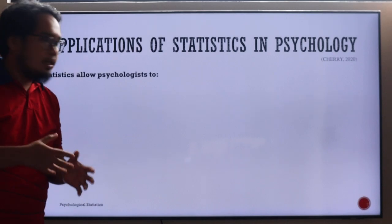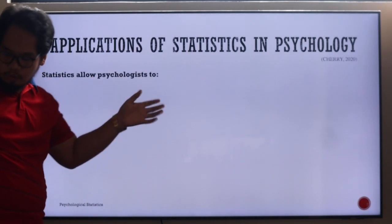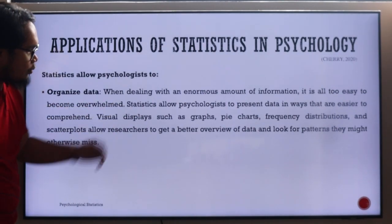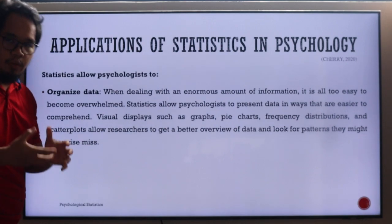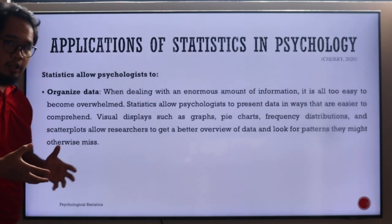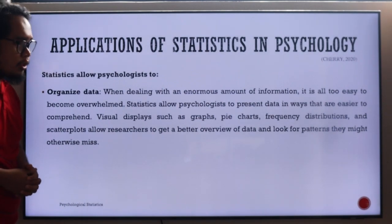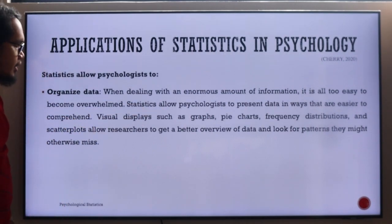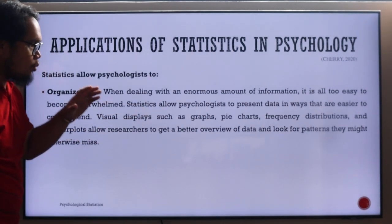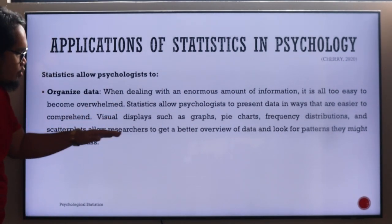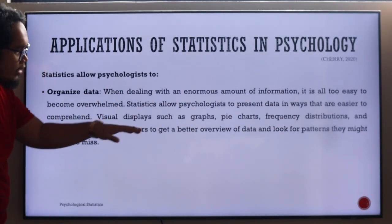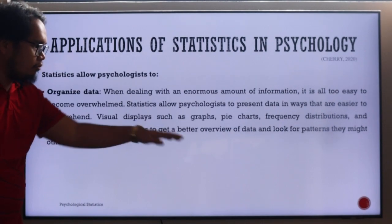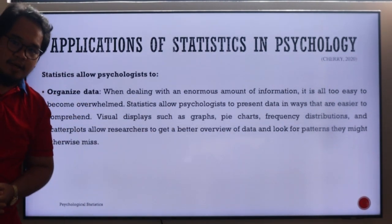Statistics allow psychologists to first organize data. When dealing with an enormous amount of information, especially when you have finished observing a group of people for some emotional dilemma, it is all too easy to become overwhelmed. Statistics allow psychologists to present data in ways that are easier to comprehend. Visual displays such as graphs, pie charts, frequency distributions, and scatter plots allow researchers to get a better overview of data and look for patterns they might otherwise miss.